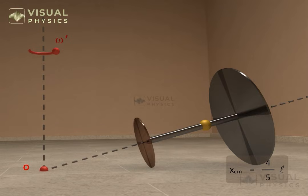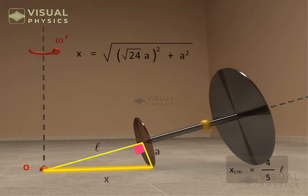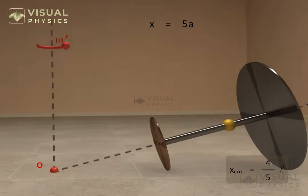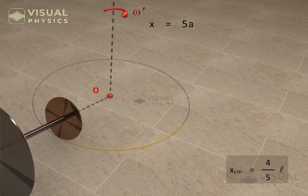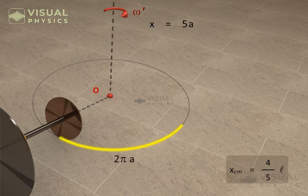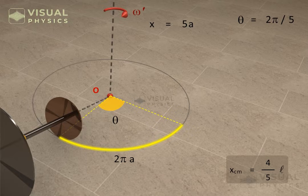Now let us find the angular velocity along the z-axis. Let us consider this right-angled triangle. We know two side lengths, therefore the third length can be determined — that is, the radius of the circle in which the point of contact of this disk is moving is equal to 5a. As the disks are rolling without slipping, in the time this disk makes one full rotation, the length of path covered on this circle will be equal to 2π times a. Therefore, this angle and consequently the angular speed along the z-axis will be equal to the resulting expression.